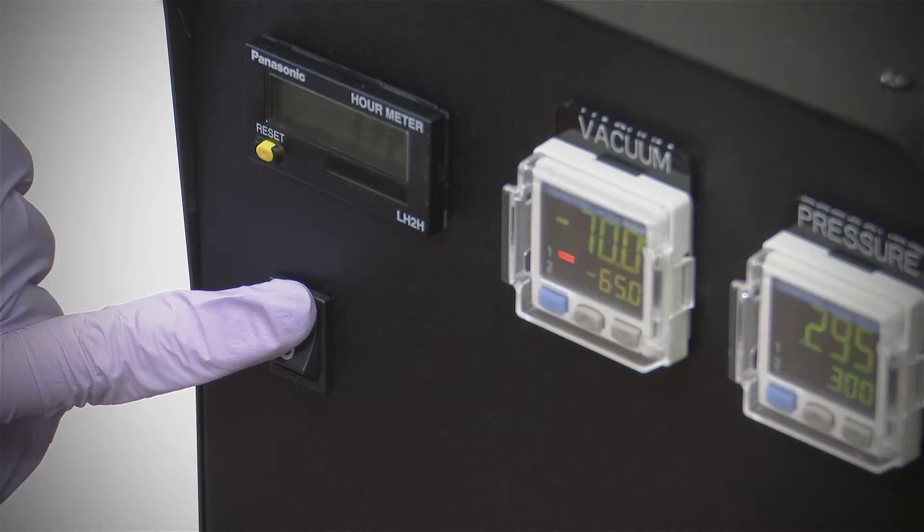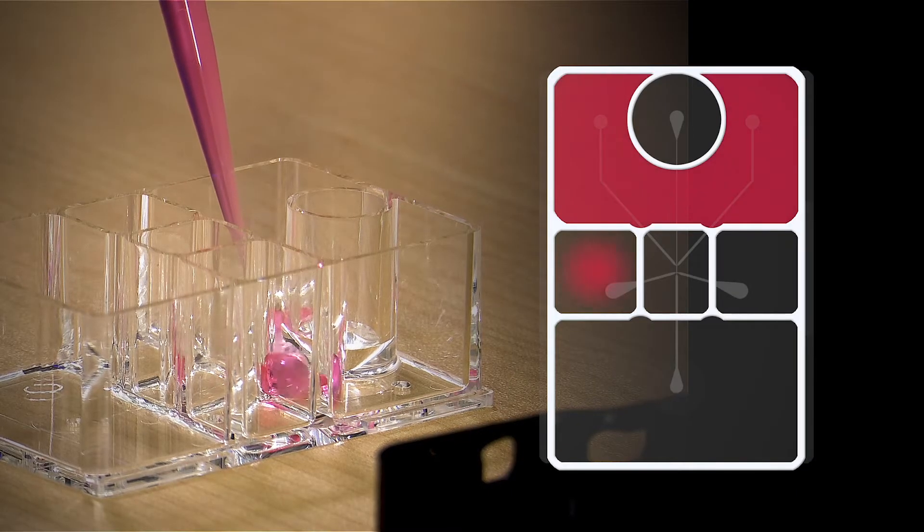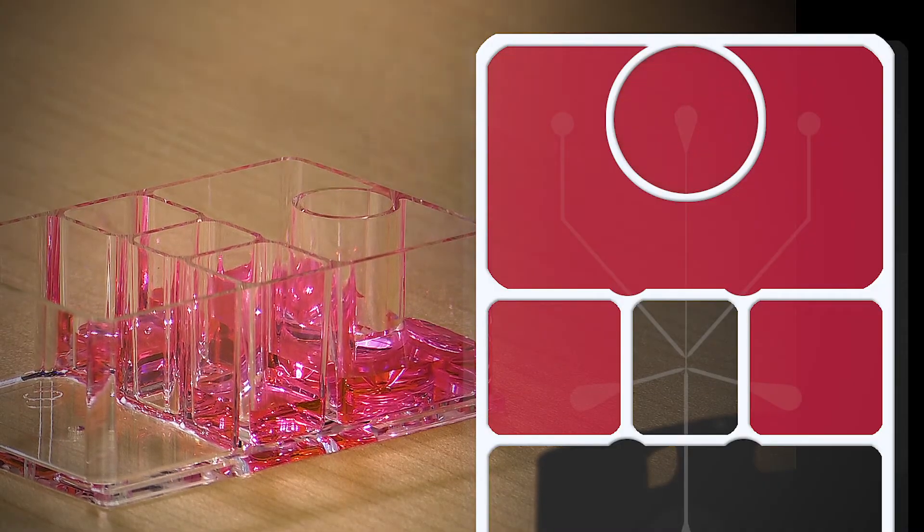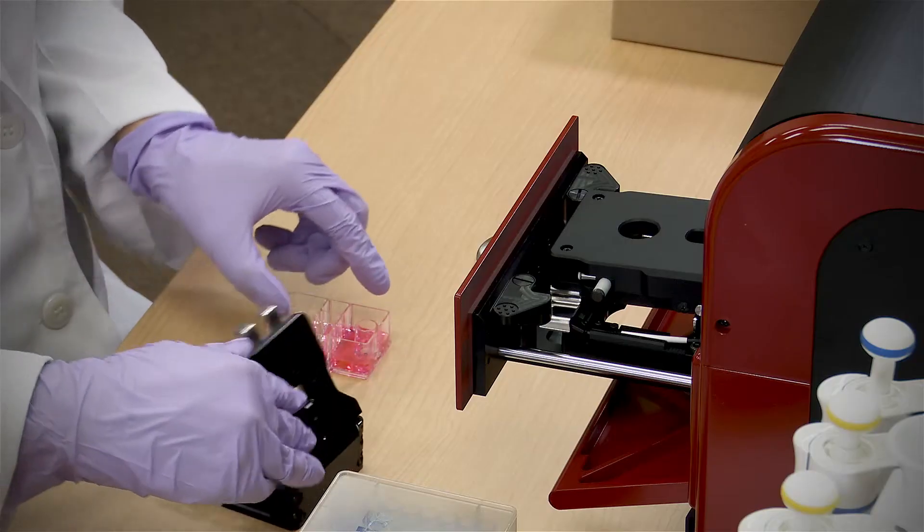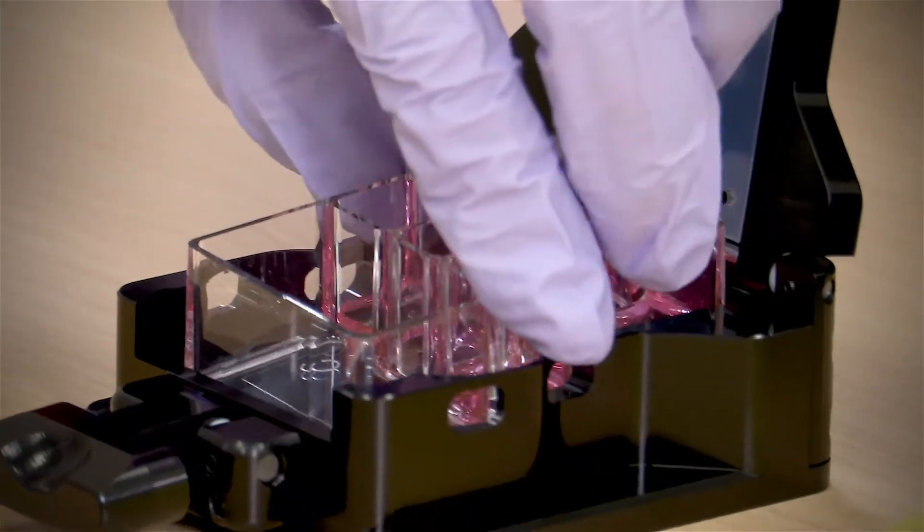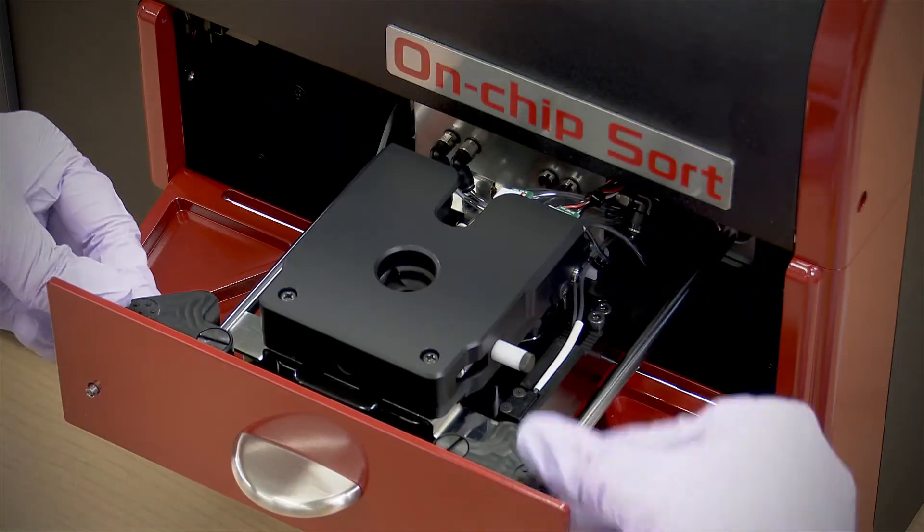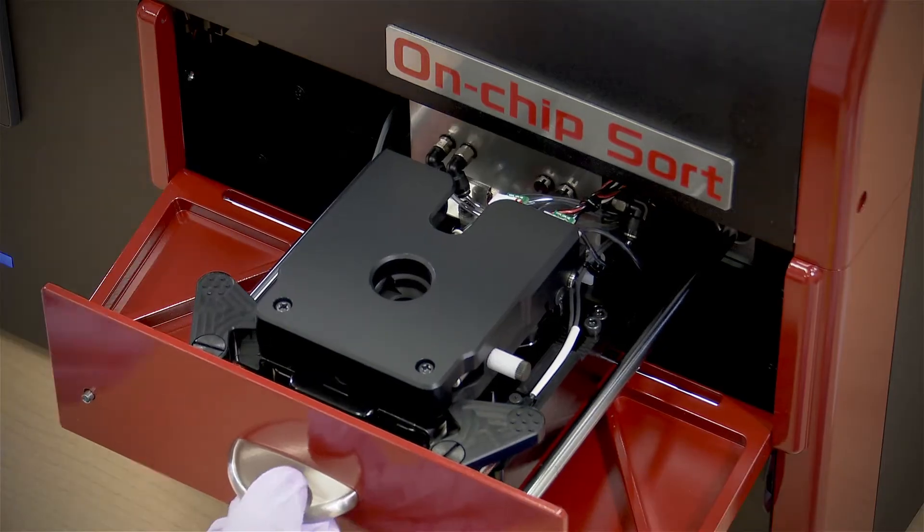Turn on the power. Load the sheath fluid and sample onto the chip. Samples can be sorted from a minimum of 20 microliters. The optics are auto-aligned after the chip is placed into the sorter.